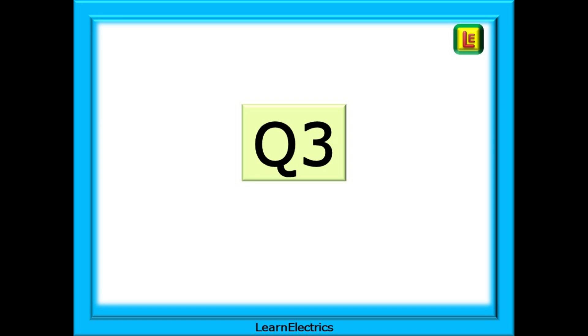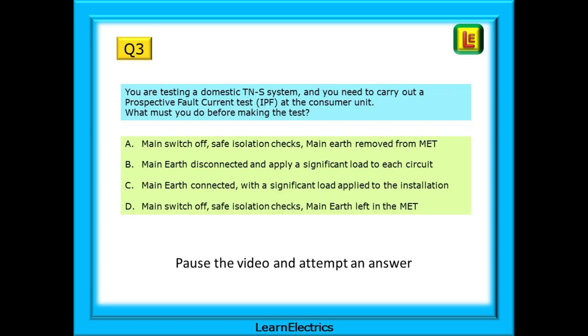Moving on to question number 3. This is one of those questions where you need to read the answer choices carefully. You are testing a domestic TNS system, and you need to carry out a prospective fault current test or IPF test at the consumer unit. What must you do before making the test? And you have four sentences of information to read. Only one is correct. Pause the video and attempt an answer.